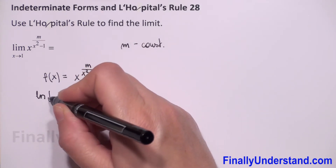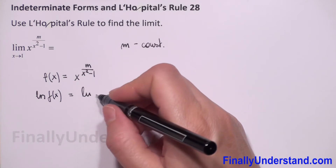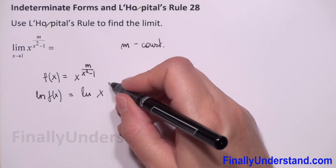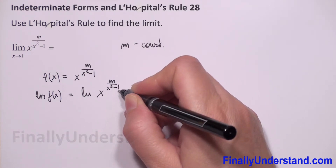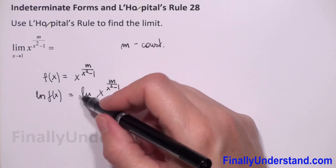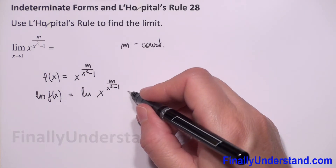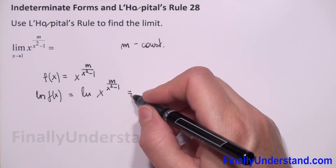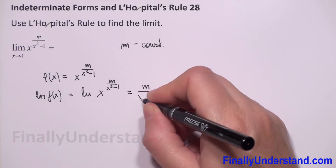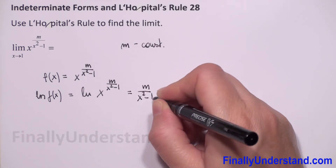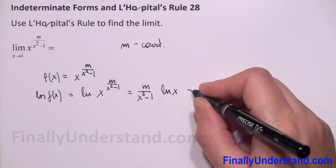Next I will take the natural logarithm of both sides, so we will have: natural logarithm of f of x equals natural logarithm of x to the power m over x squared minus 1. From properties of natural logarithm we can rewrite this as m over x squared minus 1 times natural logarithm of x.